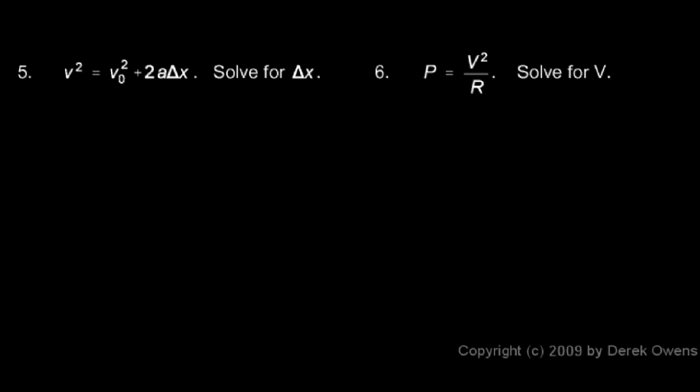In problem 5, we're given the equation v squared equals v0 squared plus 2a delta x, and we're told to solve it for delta x.